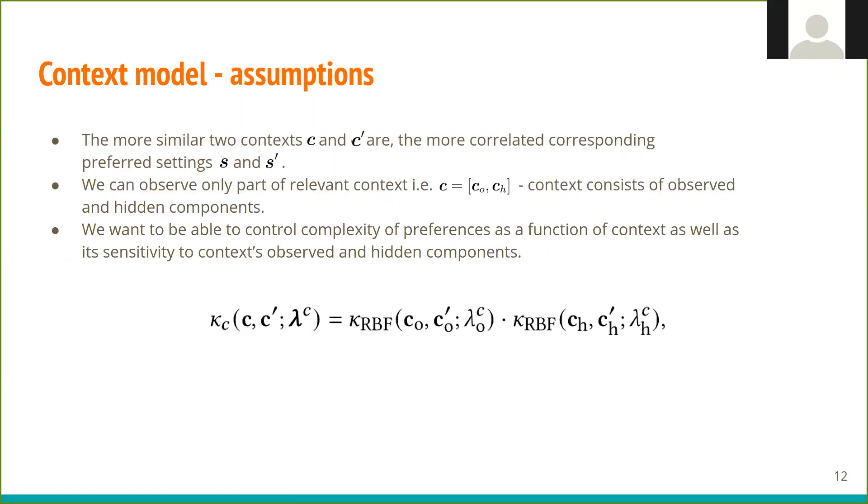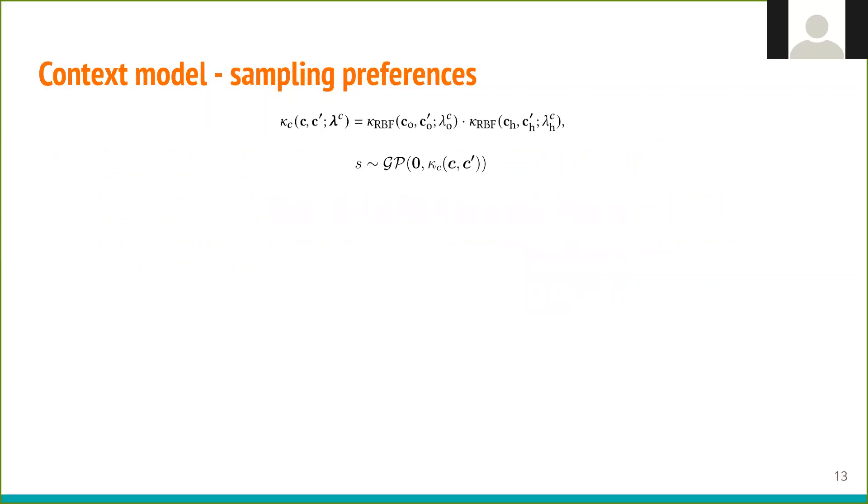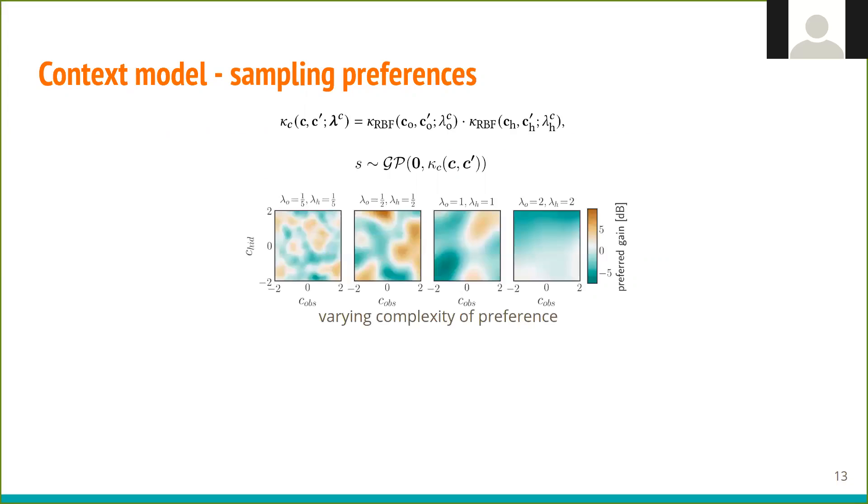We achieve this by context kernel that is product of two RBF kernels operating on observed and hidden components. By plugging the context kernel into a Gaussian process, we can take samples of preferred setting. In these samples, we use only two context features, one observed and one hidden. By modifying the value of lambdas, we can control the complexity of preferences. The more complex the preferences are, the harder it will be for the agent to learn them.